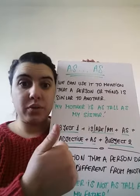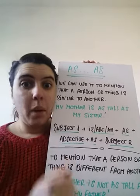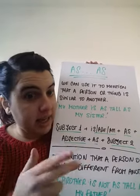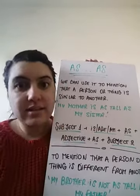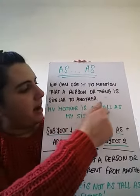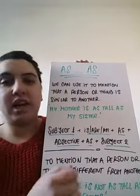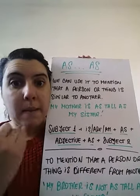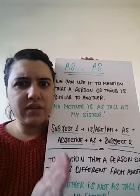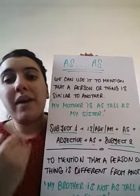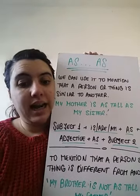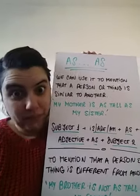Entonces: primer sujeto, 'is'/'are'/'am', 'as', adjective, 'as' again, and the second subject. Mi mamá es tan alta como mi hermana — My mother is as tall as my sister. That is to say that something is similar to another thing. Eso es para hablar de similitud — es similar la altura de mi hermana a la de mi mamá.